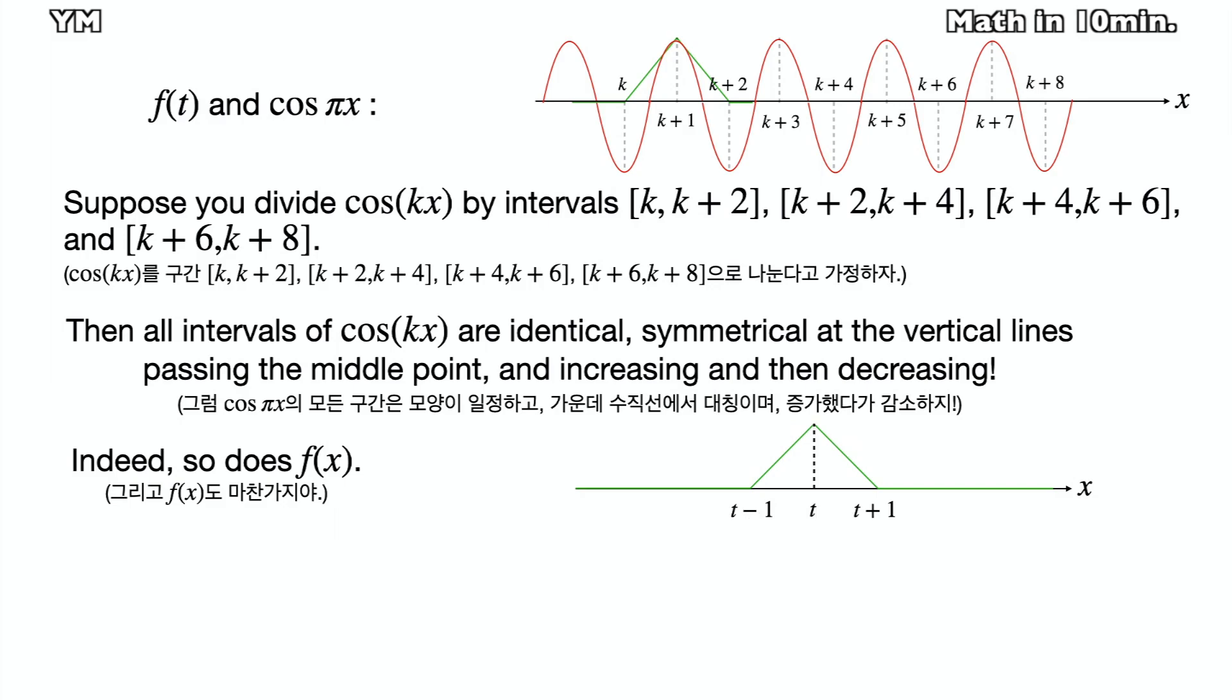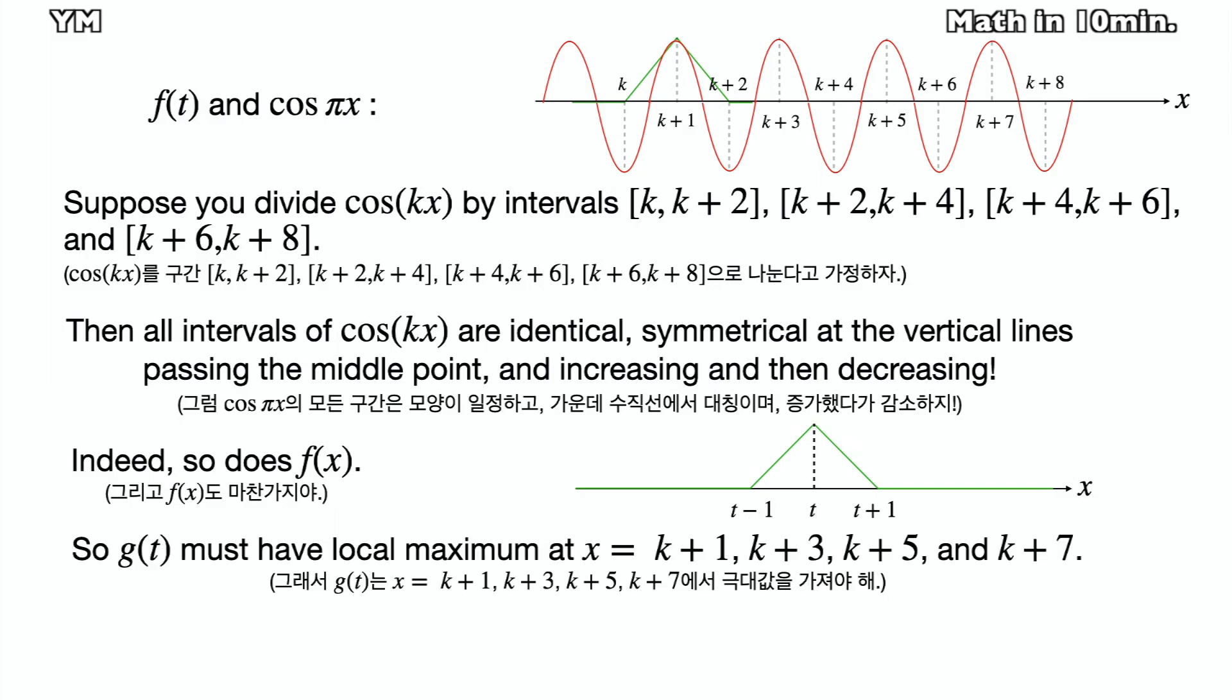So does fx. So I'm convinced that gt has local maximum at t equals k plus 1, k plus 3, k plus 5, and k plus 7, because cosine pi x has period of 2 and the length of non-zero interval of fx is 2 as well.